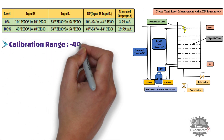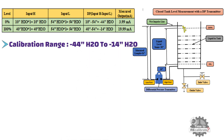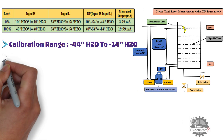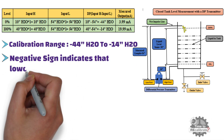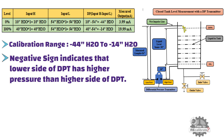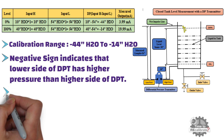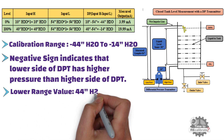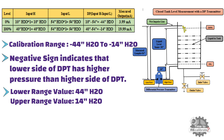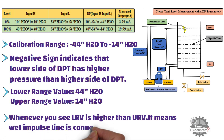As you can see from the table, the calibration range is minus 44 inches H2O to minus 14 inches H2O. Note that you will always get a negative range when measuring level in a closed tank with a wet impulse line. The negative sign indicates that the low port of the DP transmitter has higher pressure than the high port. Since you cannot set a negative calibration range in the DP transmitter, set 44 inches H2O as the lower range value and 14 inches H2O as the upper range value. Whenever the lower range value is higher than the upper range value, it means a wet impulse line is connected to the low port of the DP transmitter.